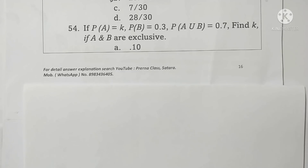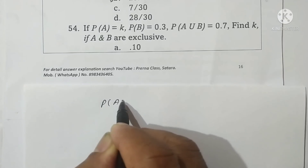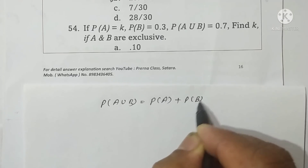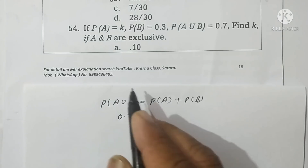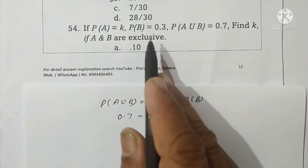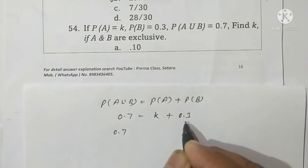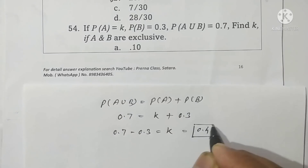Question 54: If probability of A equals k, probability of B equals 0.3, probability of A union B equals 0.7, find k if A and B are mutually exclusive. Since A and B are exclusive, probability A union B equals probability A plus probability B. So 0.7 equals k plus 0.3, giving k equals 0.4. Option B is correct.